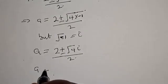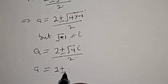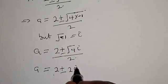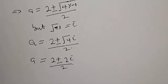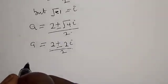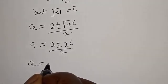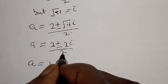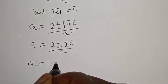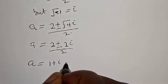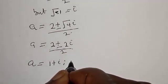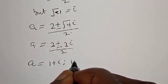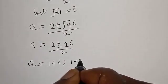The square root of 4 is 2, then multiplied by i over 2. Therefore, the final answer for the first case is a is equal to 1 plus i or 1 minus i.